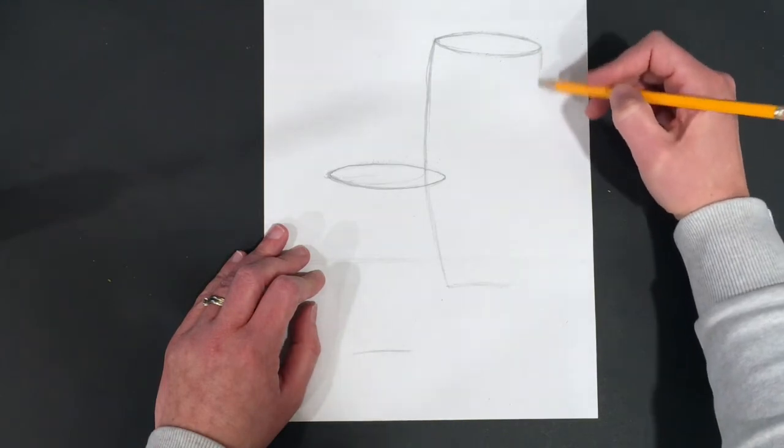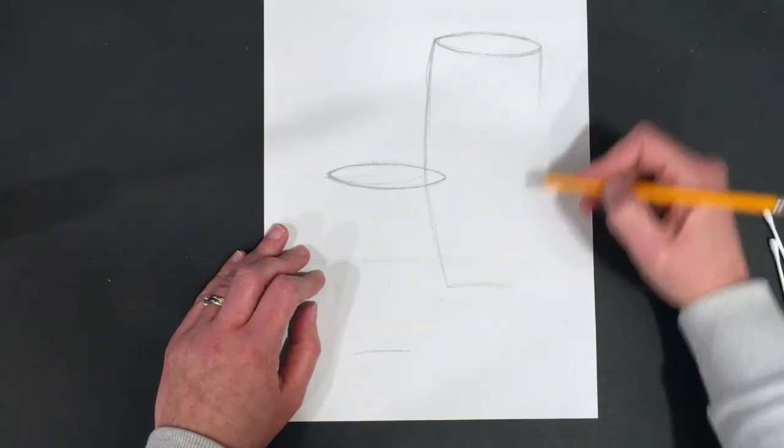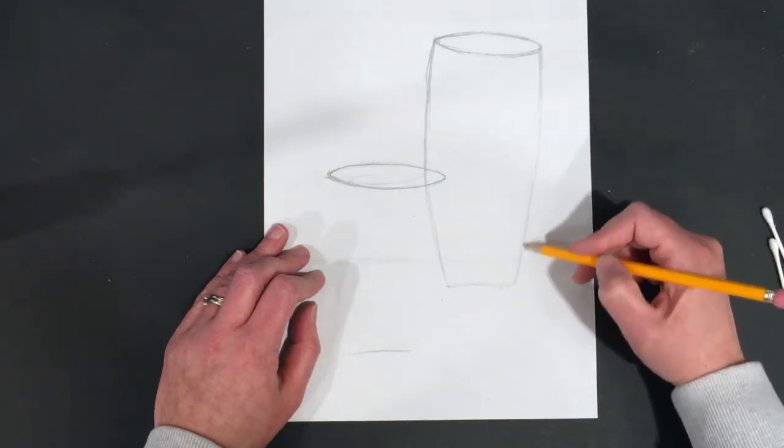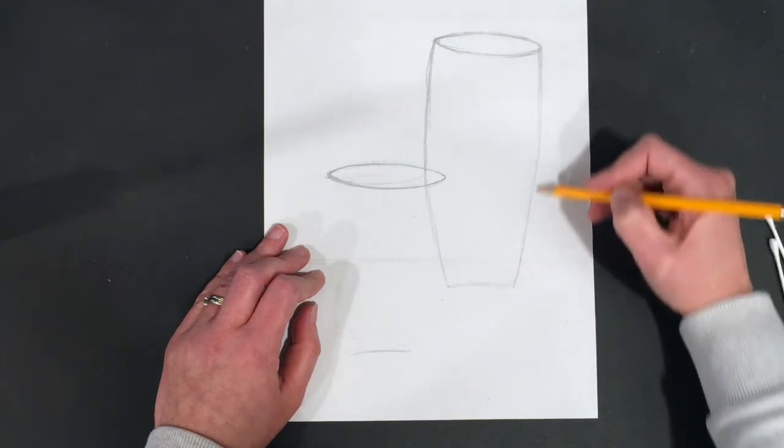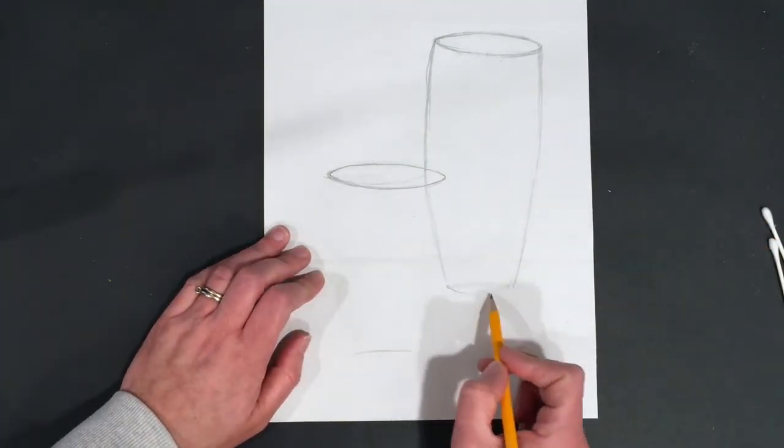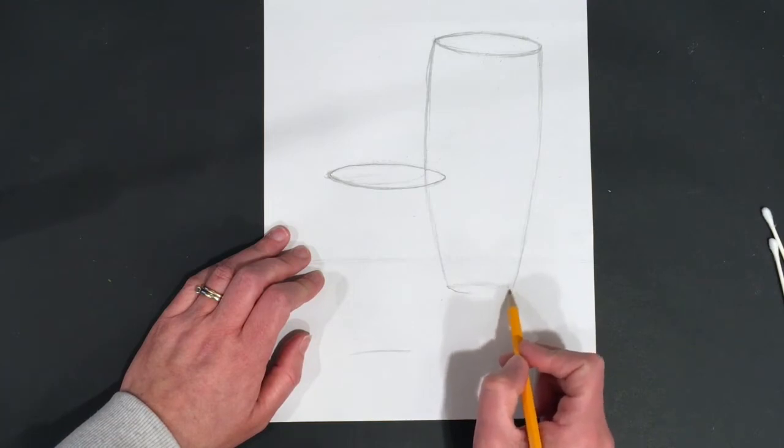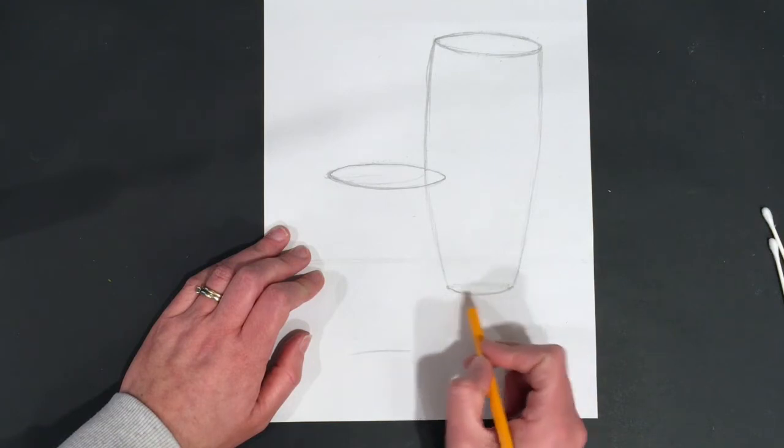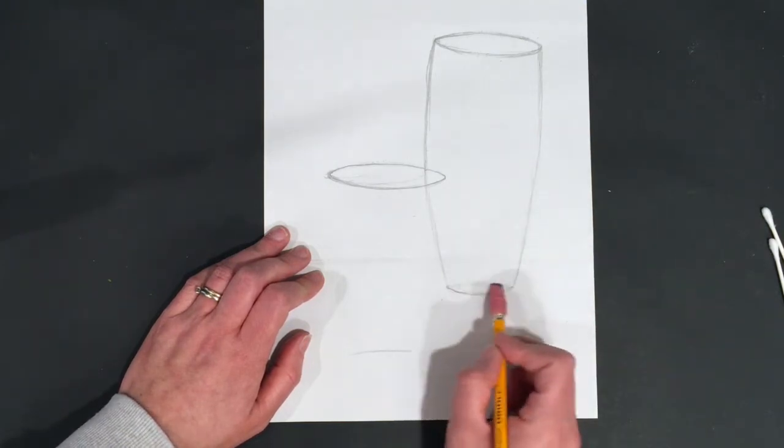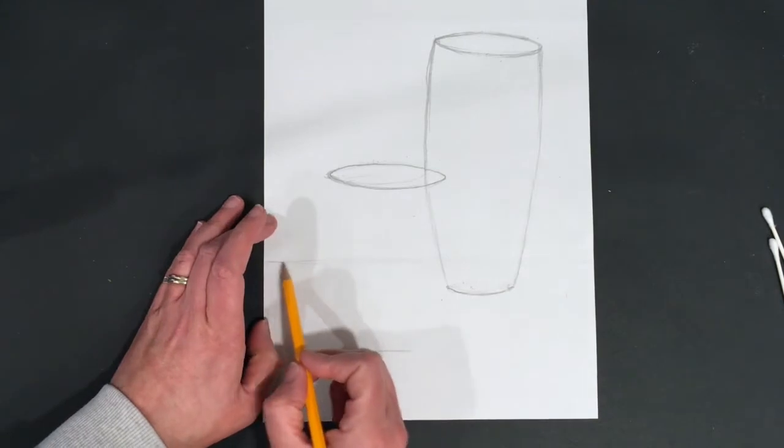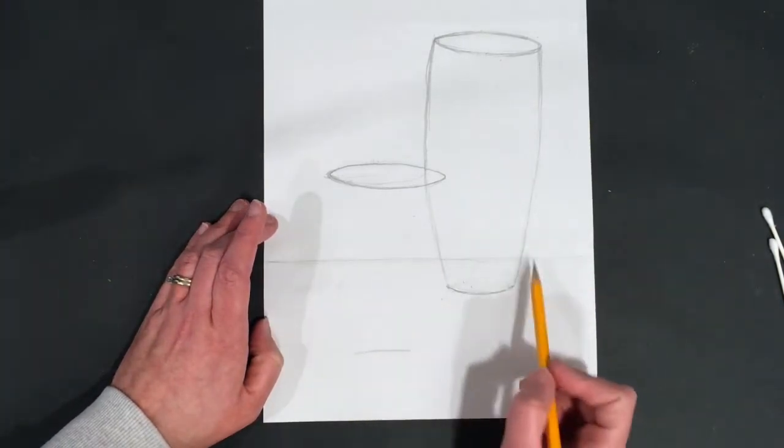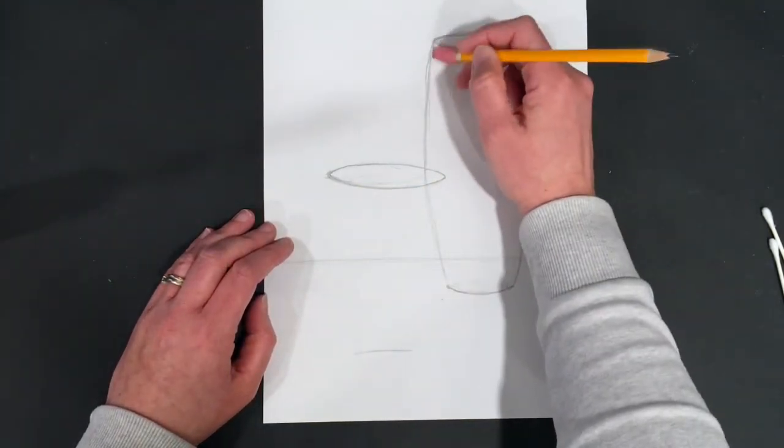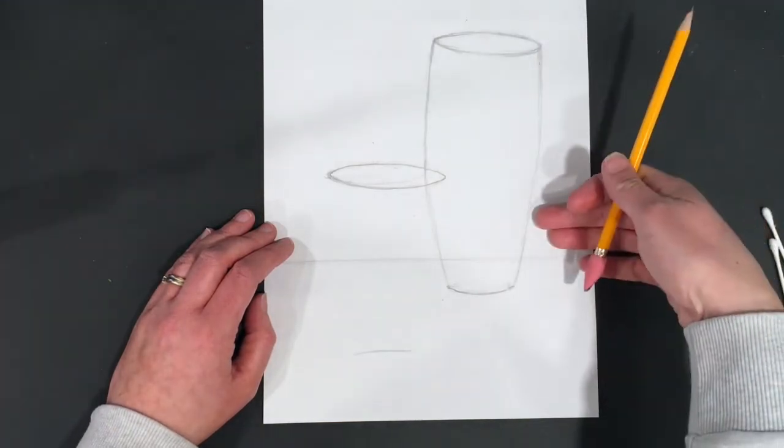We're not going to erase any of our overlaps until we get to highlights. We're going to leave all our overlaps intact until we get to the highlight portion of this. Okay, so there's the other side. And then now I'm going to put in the bottom curve of this glass, just the front edge of the ellipse, because there's some more complex stuff that's happening inside the glass. So again, we're leaving all of our overlaps. Leave your table line.